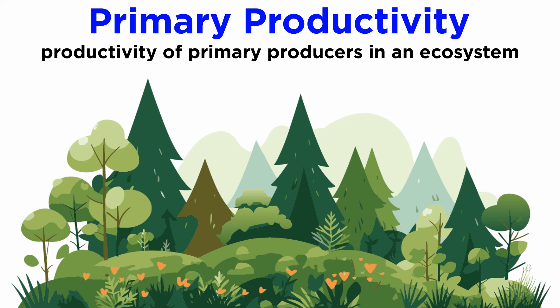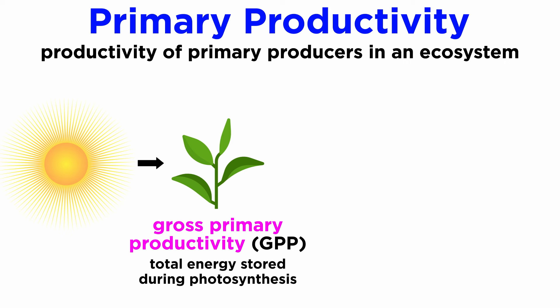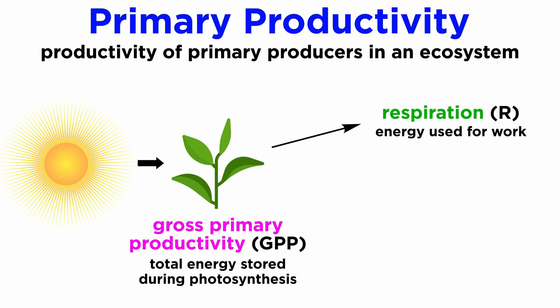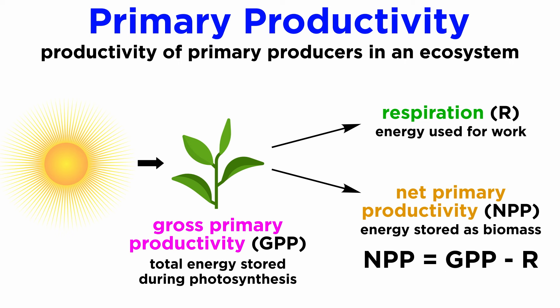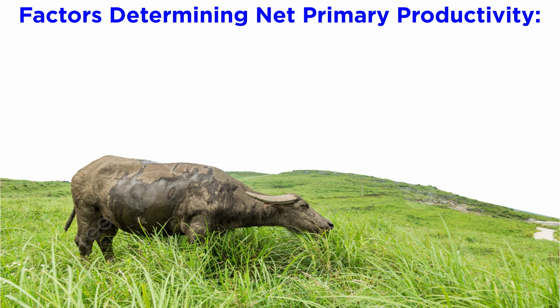There are two basic types of productivity: gross and net. To illustrate the difference, let's consider primary productivity, which is the productivity of the primary producers of an ecosystem. Gross primary productivity, or GPP, is the rate at which solar energy is captured in sugar molecules during photosynthesis. GPP represents the amount of energy captured per unit area, per unit time. Producers, such as plants, use some of this energy for metabolism and cellular respiration, and some for growth or building tissues. Net primary productivity, or NPP, represents gross primary productivity minus the rate of energy loss to metabolism and maintenance. In other words, it's the rate at which energy is stored as biomass by plants or other primary producers, and made available to the consumers in the ecosystem. Net primary productivity varies among ecosystems and depends on many factors.